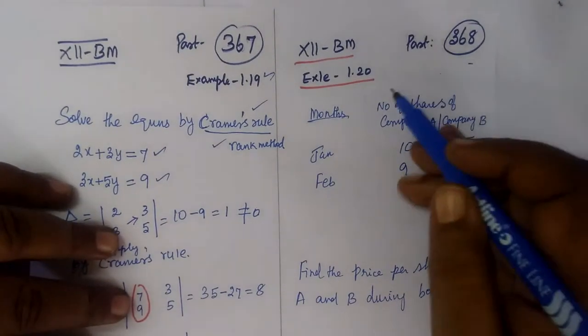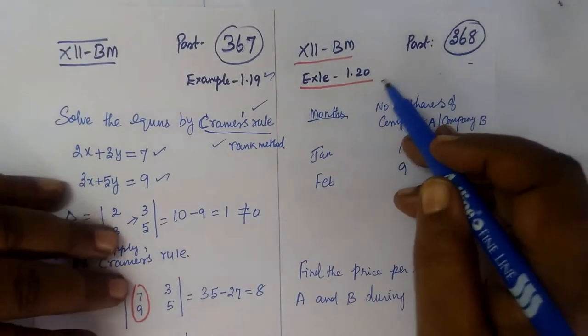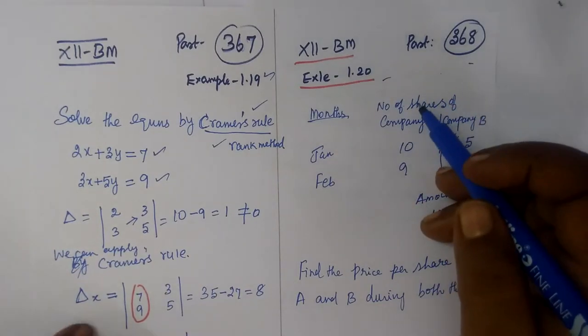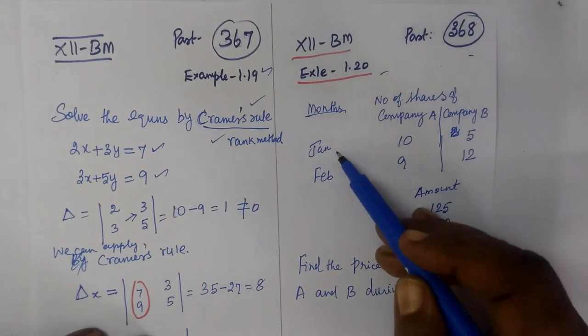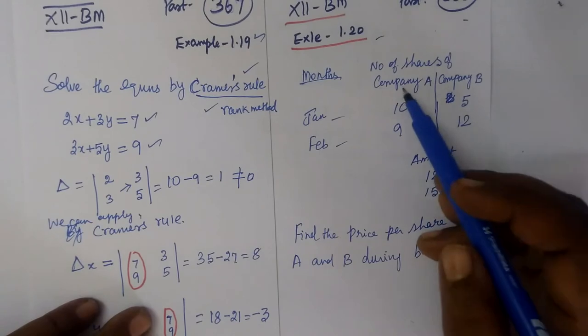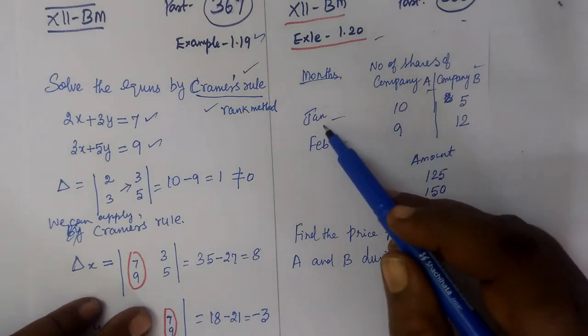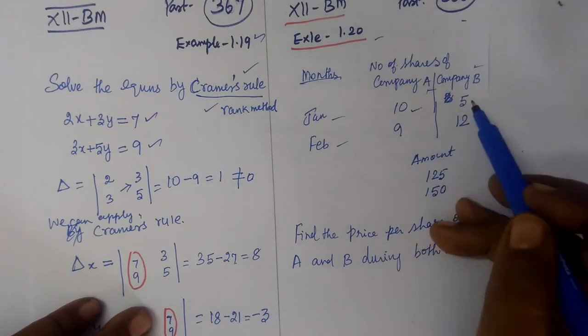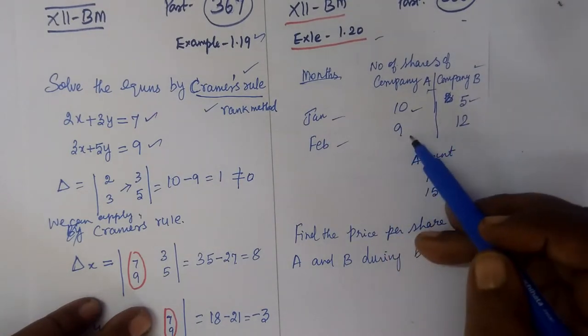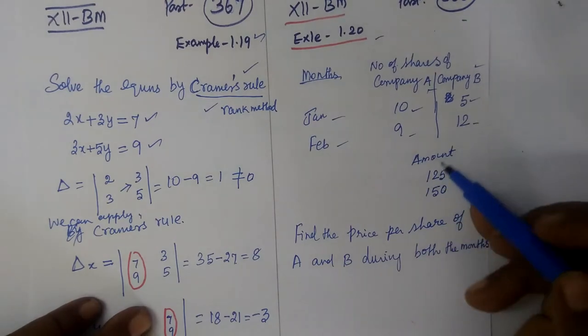So next one, part 368, 11th business math, example 1.20. You are given 2 months, January and February. Number of shares from company A and company B given: 10 and 5 in January month.